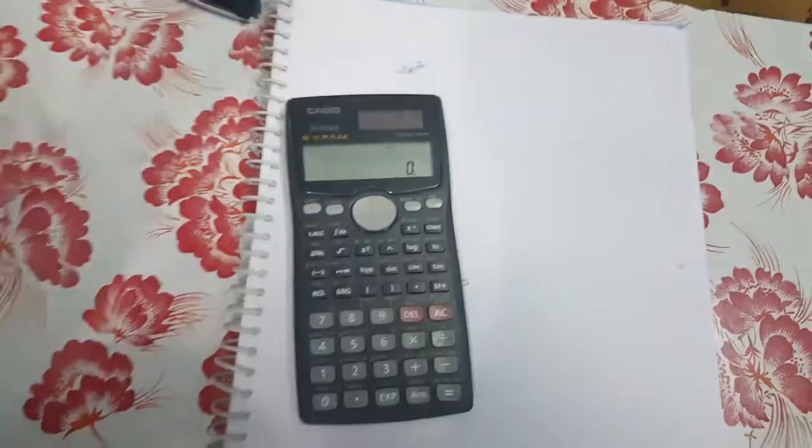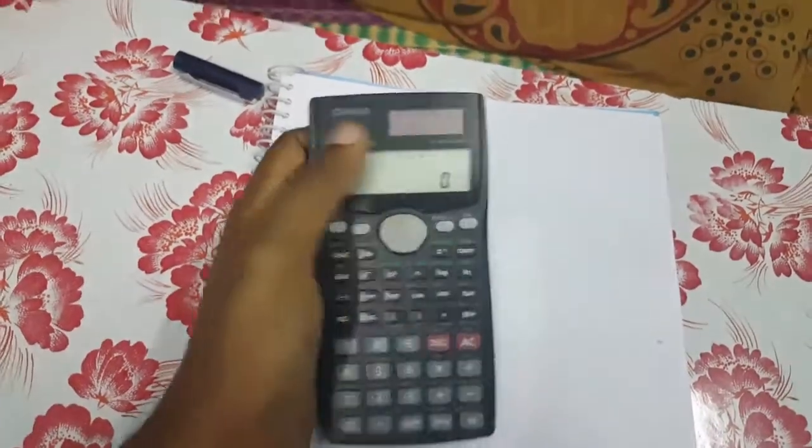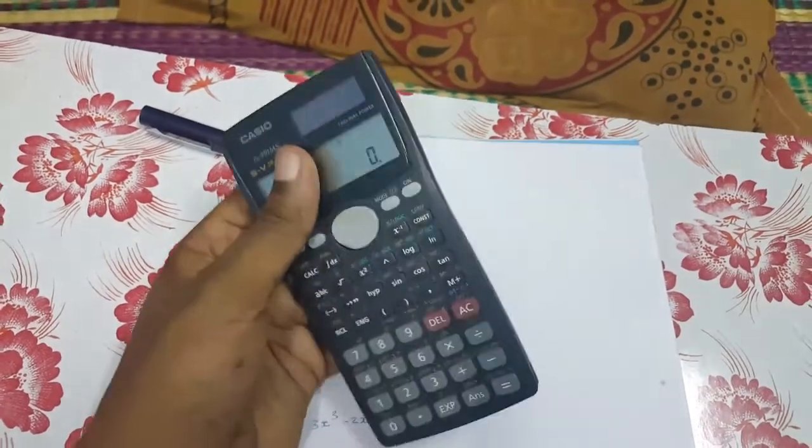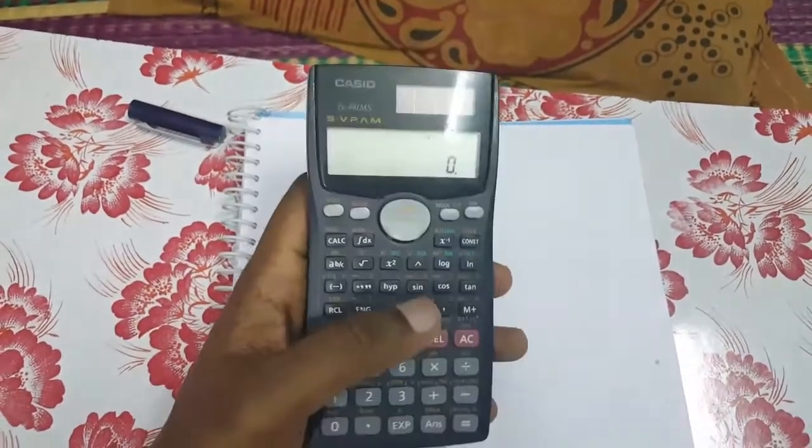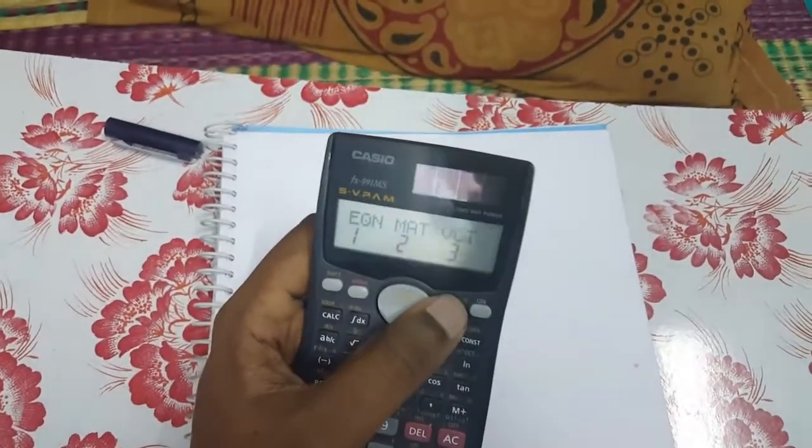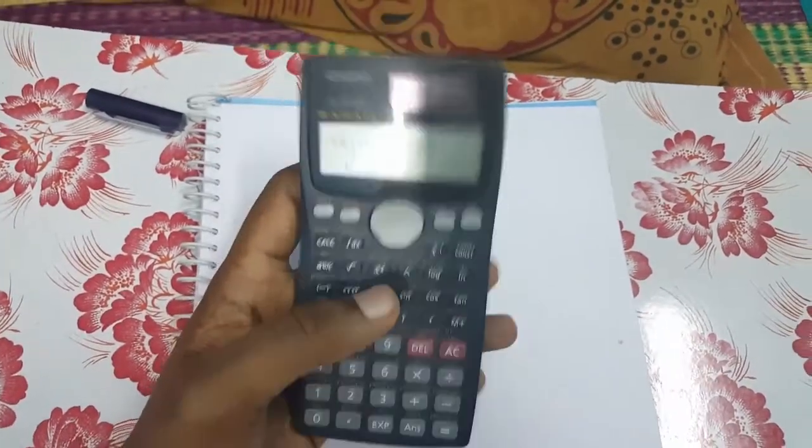This is a scientific calculator. Brand name is Casio and the model name is FX991MS. In calculator you can perform various functions, scientific functions like you can solve the equation.